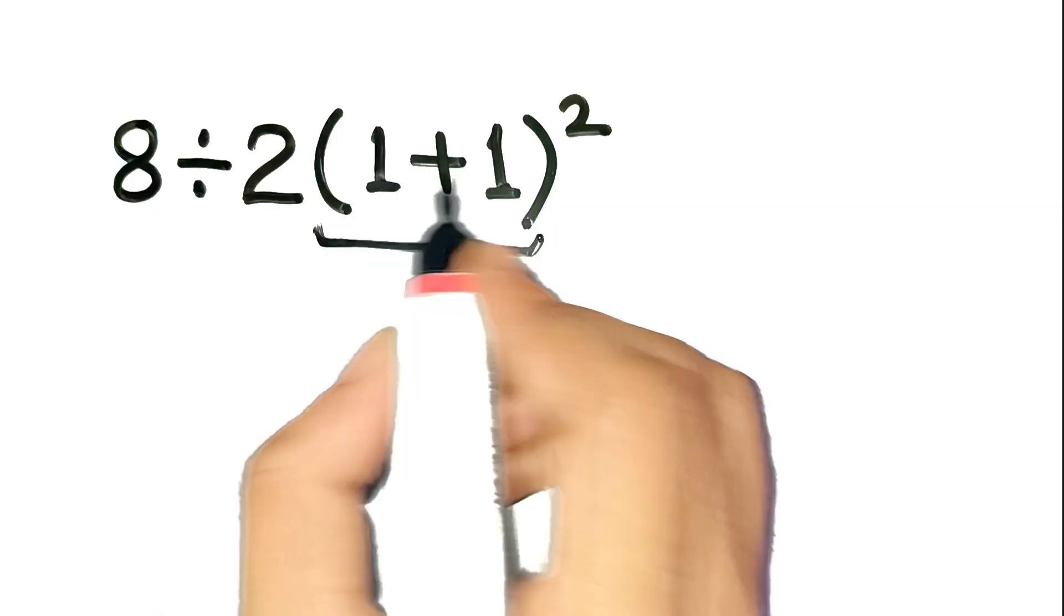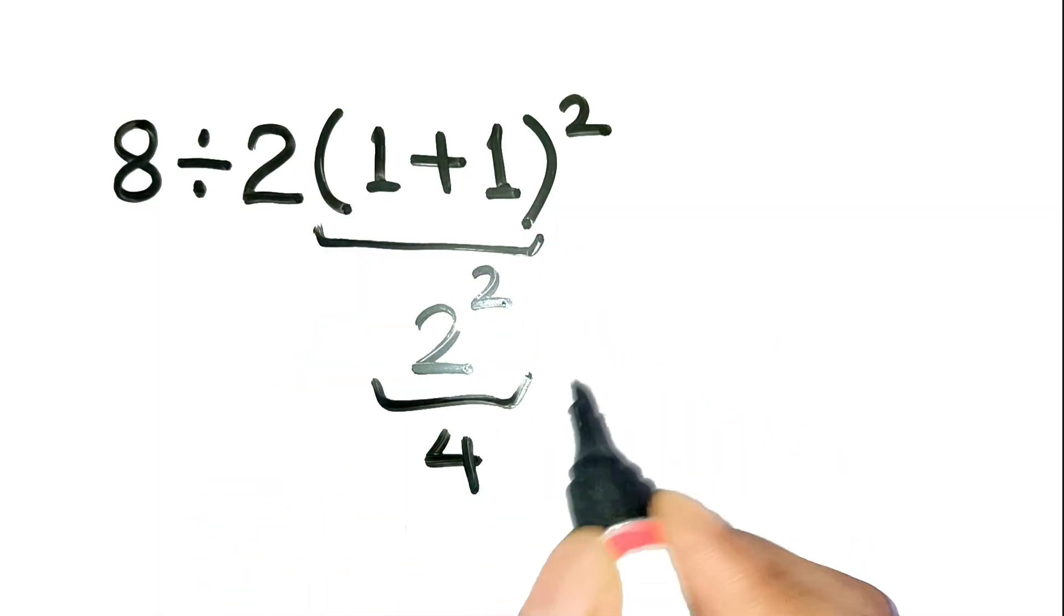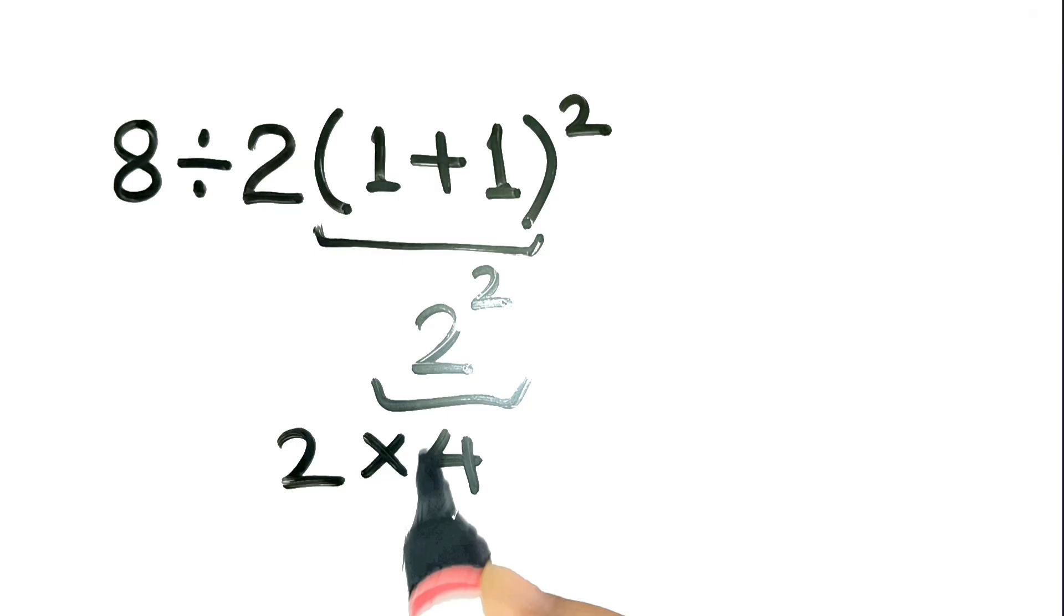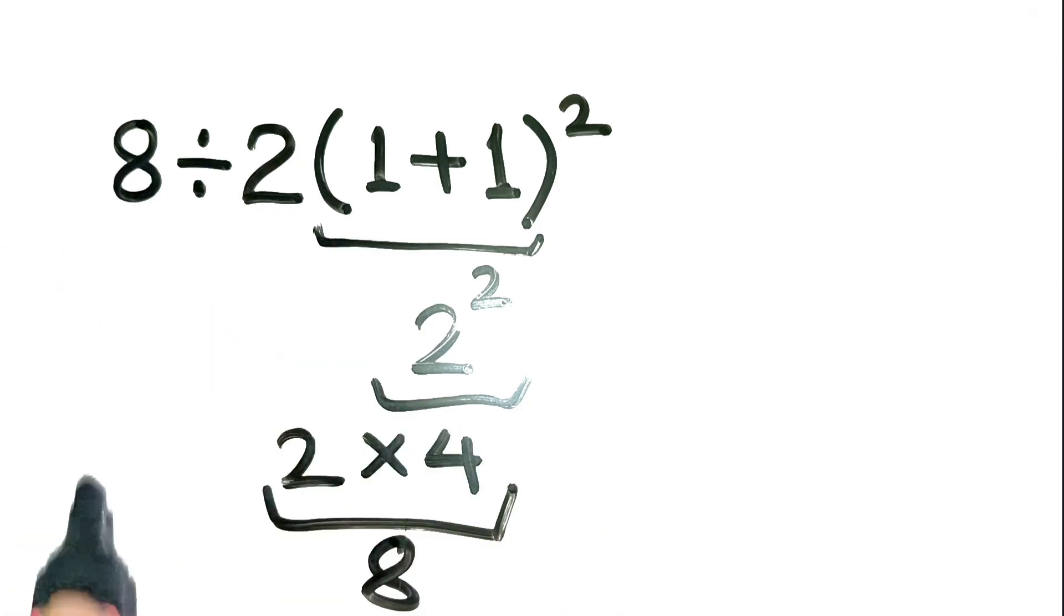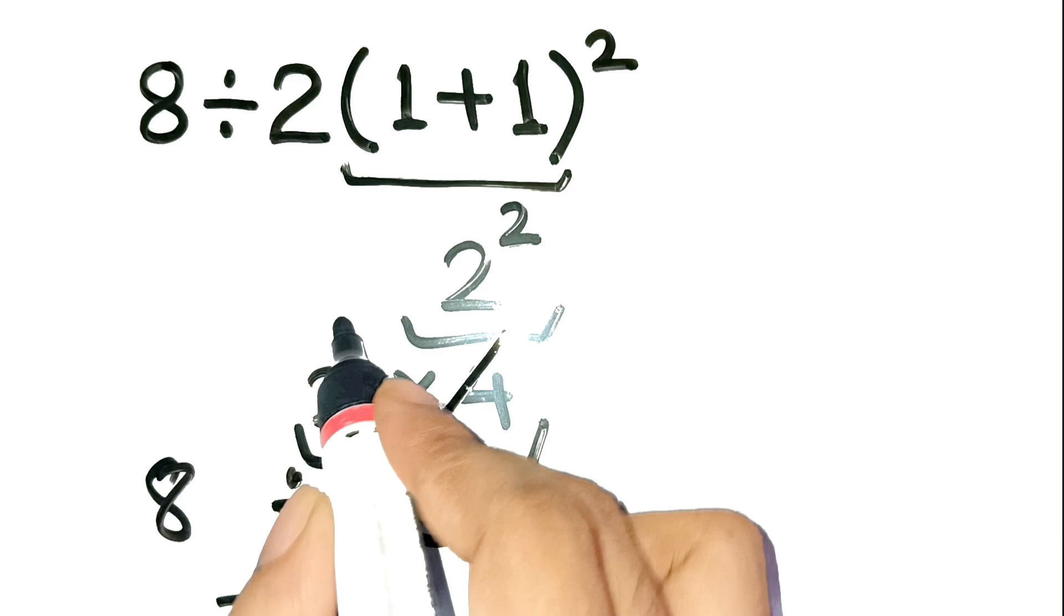Inside the parentheses, 1 plus 1 is 2. Square that to get 4. Multiply by 2, you get 8. And then 8 divided by 8, boom, 1. Sounds reasonable at first glance, right?